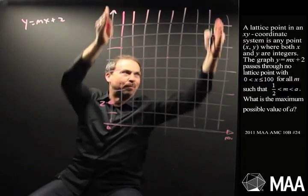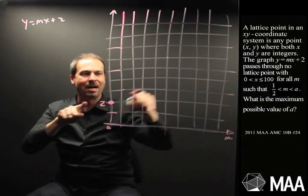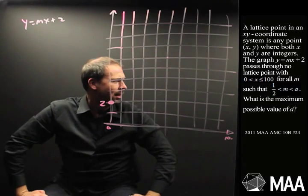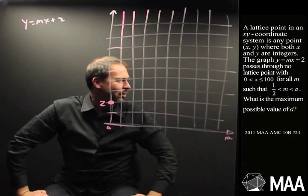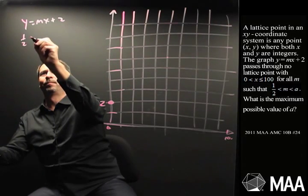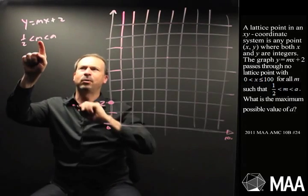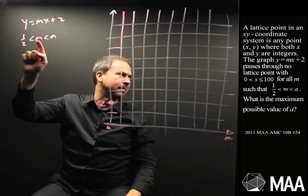Alright. This line, y equals mx, so some slope and starts there at 2, goes through none of these intersection points somehow. At least for x between 0 and 100. So, I guess, in this sort of column of points, okay, this line, whatever it is, doesn't go through any of those lattice points.